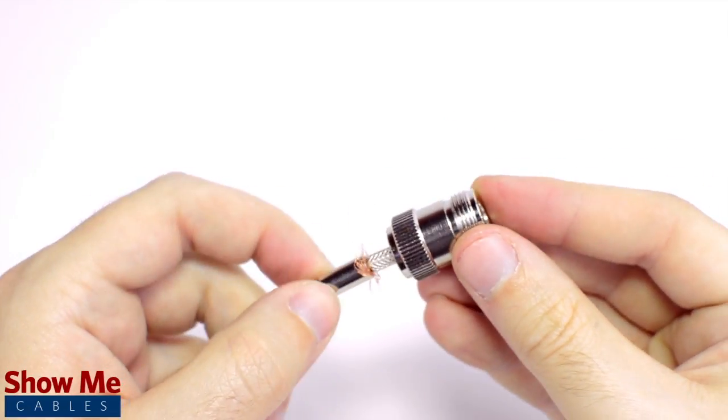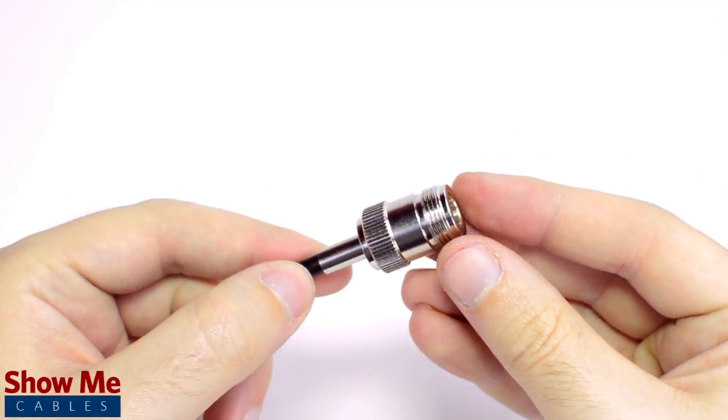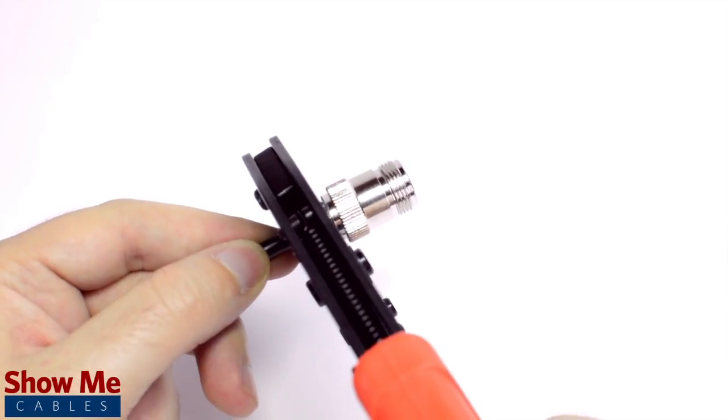Then slide the ferrule up to the base of the connector, folding the shield with it. Crimp the ferrule under the outer jacket to complete termination.